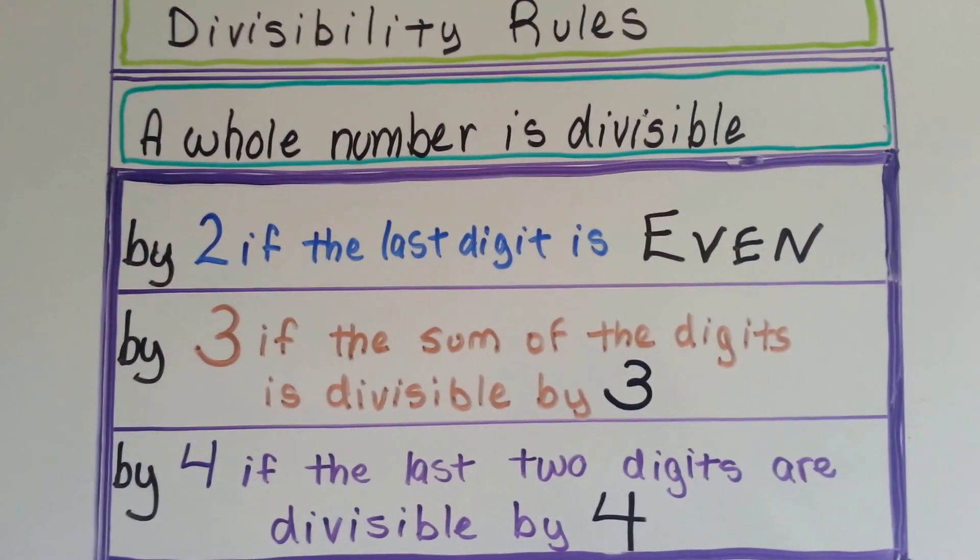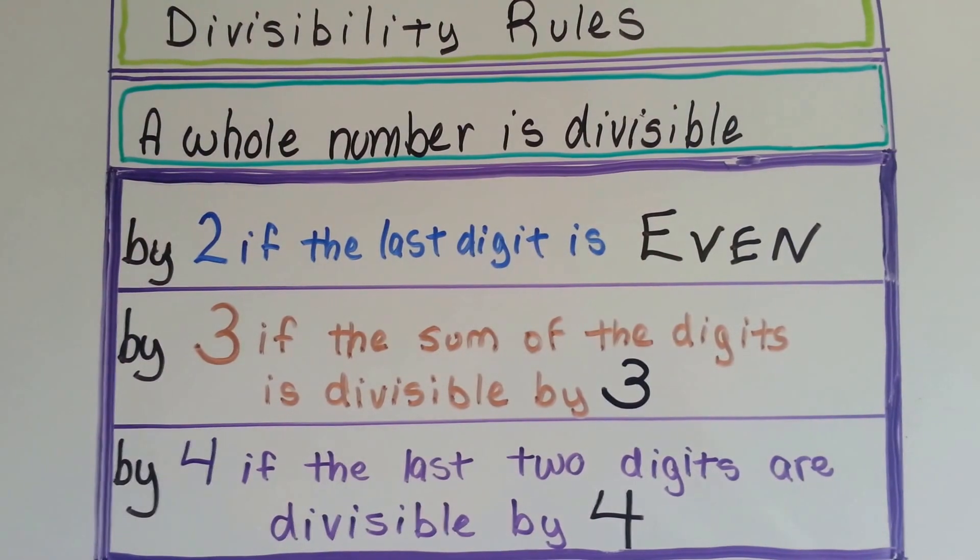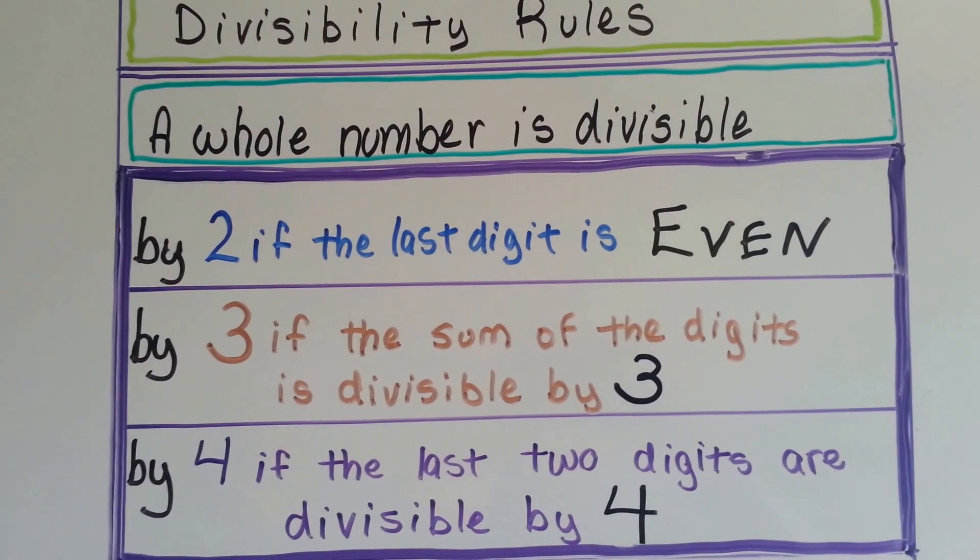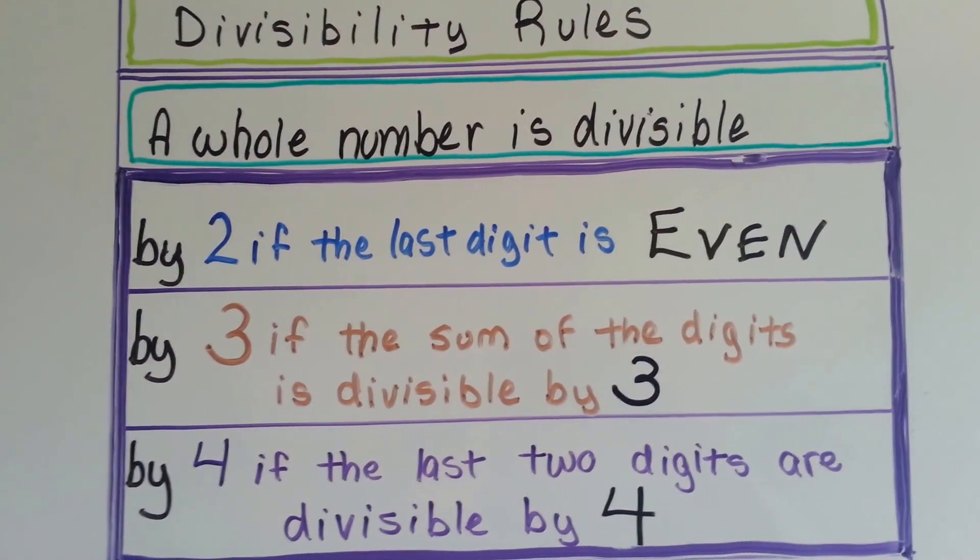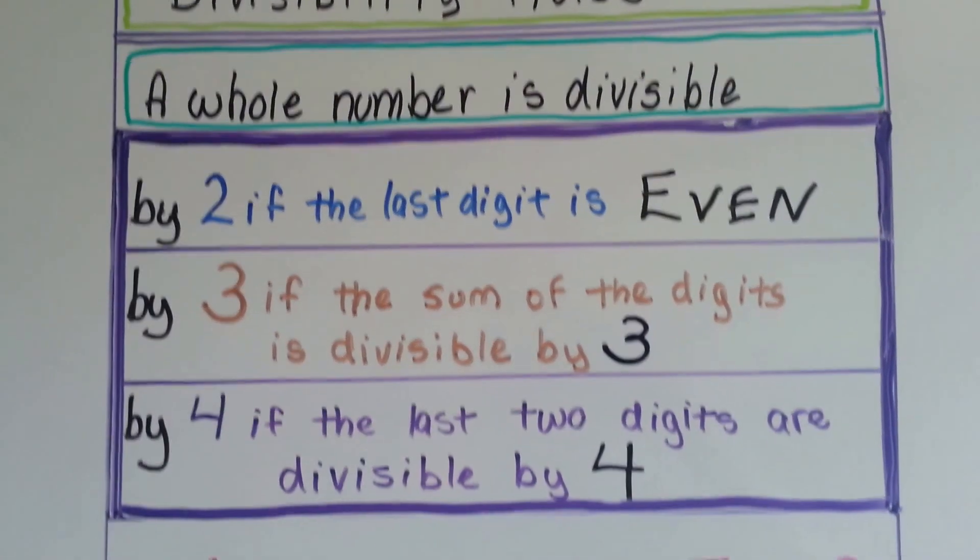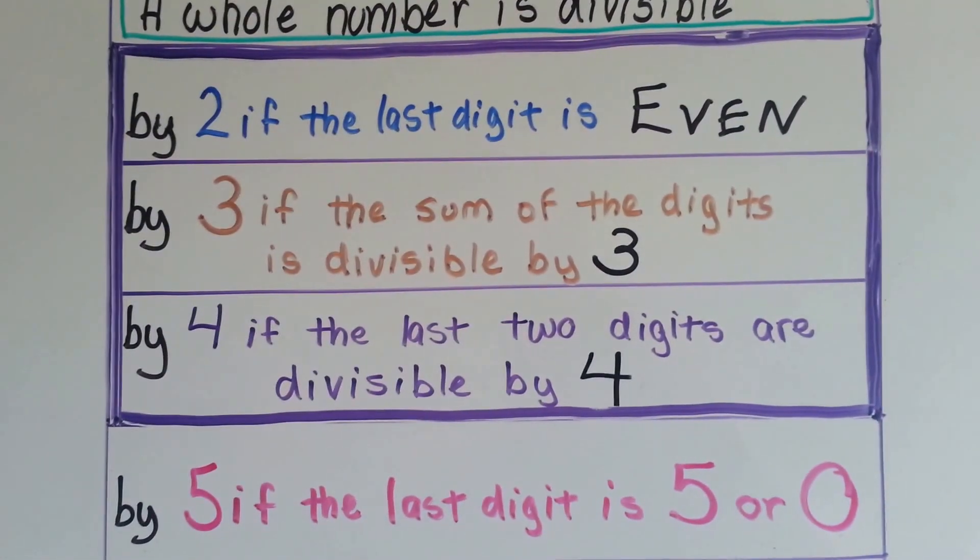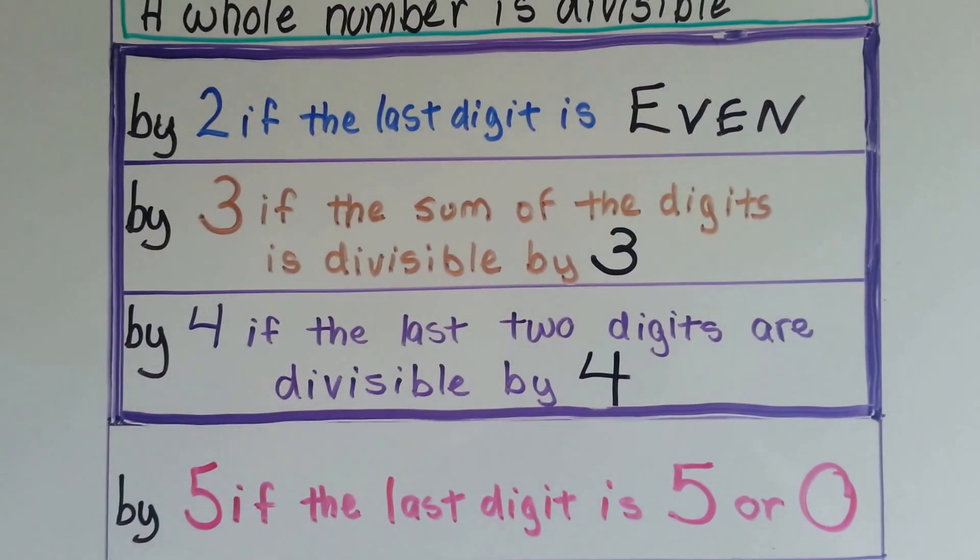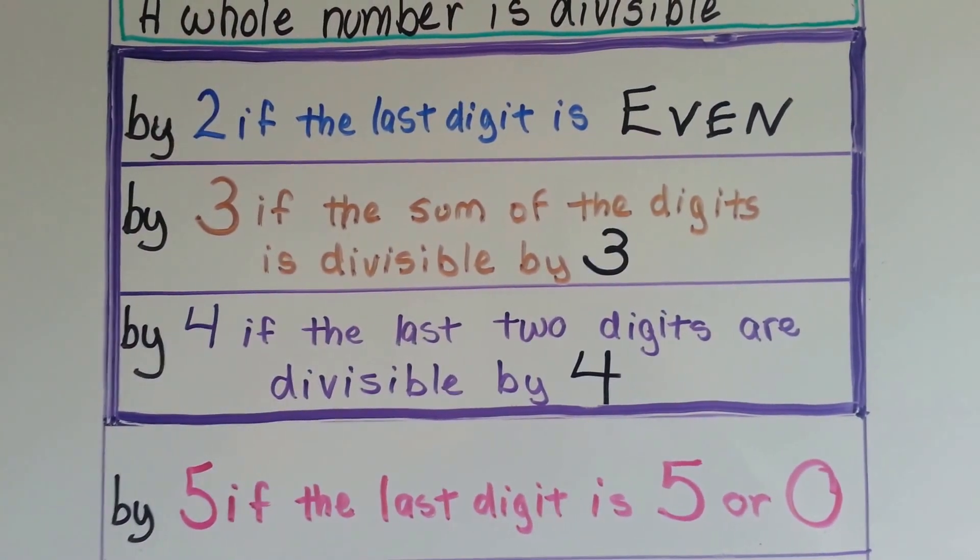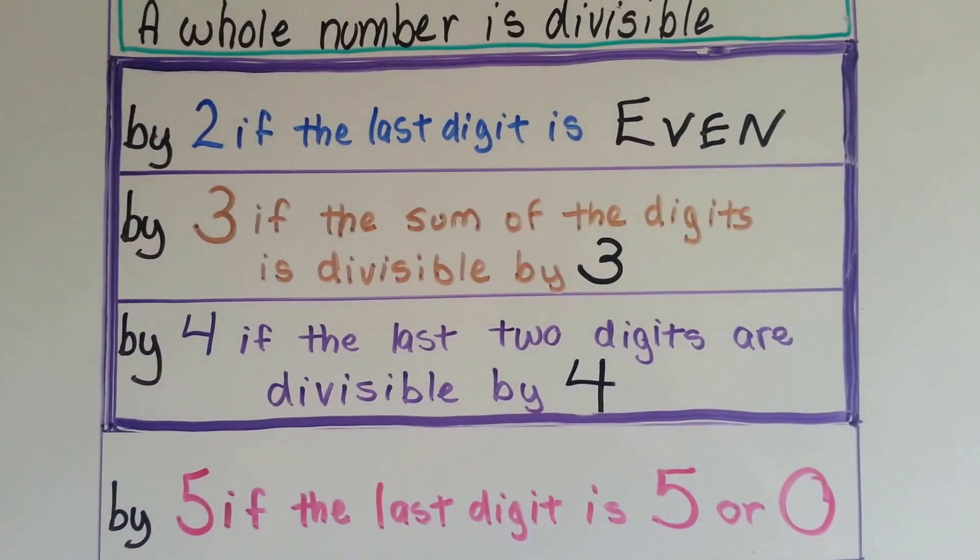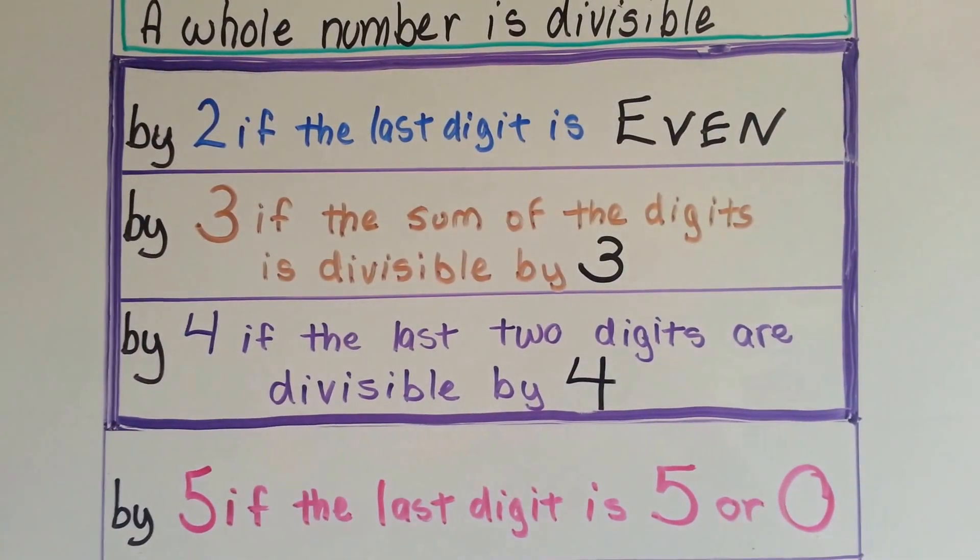It's divisible by 4 if the last two digits are divisible by 4, like the number 6208. The 8 is divisible by 4, so 6208 is divisible by 4. It's divisible by 5 if the last digit is a 5 or a 0. You know how the 5 times table, all the numbers end with a 5 or a 0, like 5, 10, 15, 20. The last digit is either a 5 or a 0.